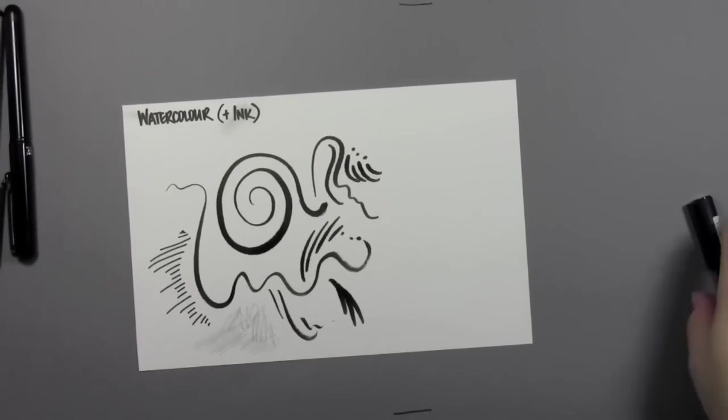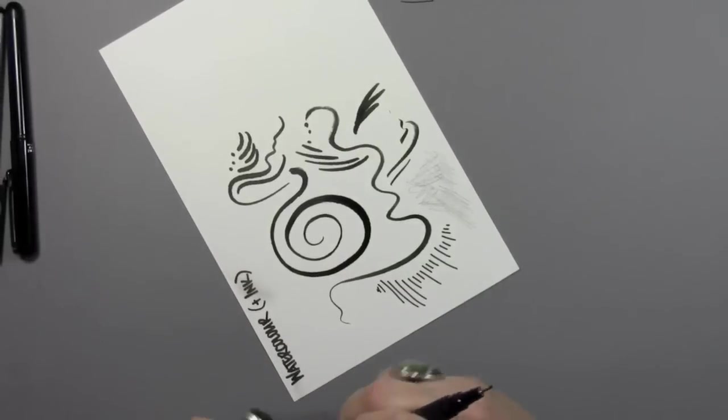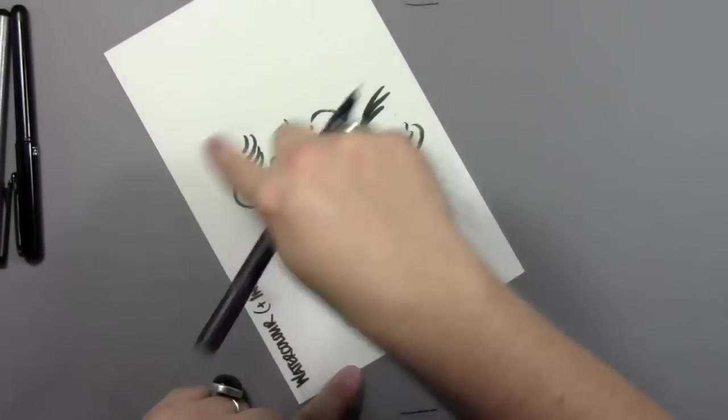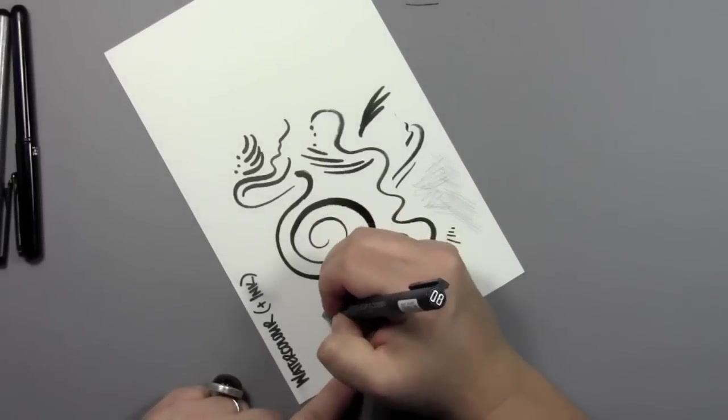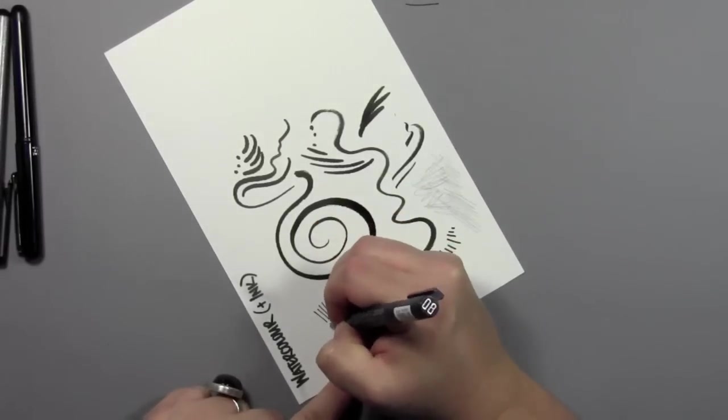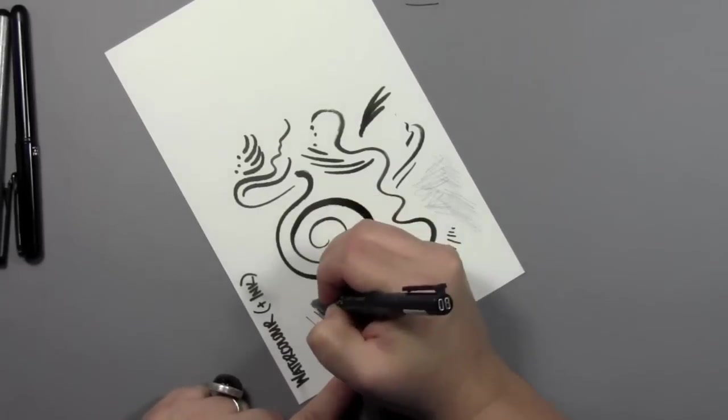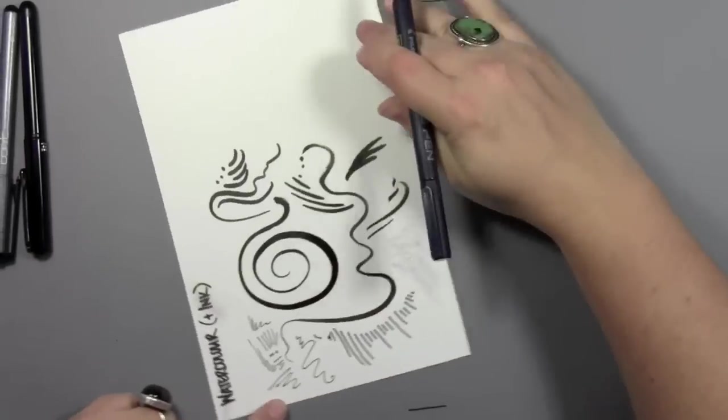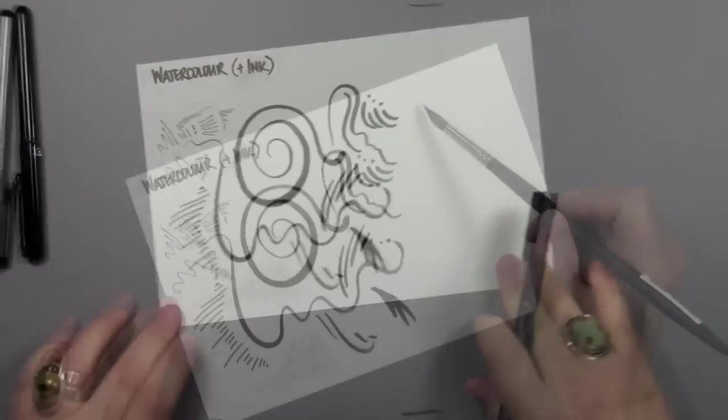And one of the advantages to silver point which is nice is it doesn't smear, there's no graphite or anything left behind so you can use it underneath a marker rendering or a watercolor and it doesn't get dirty. This is still wet. I'm gonna go ahead, I'm not done with this yet but I think I'm gonna come back to doing watercolor over this later because this is still really really wet.